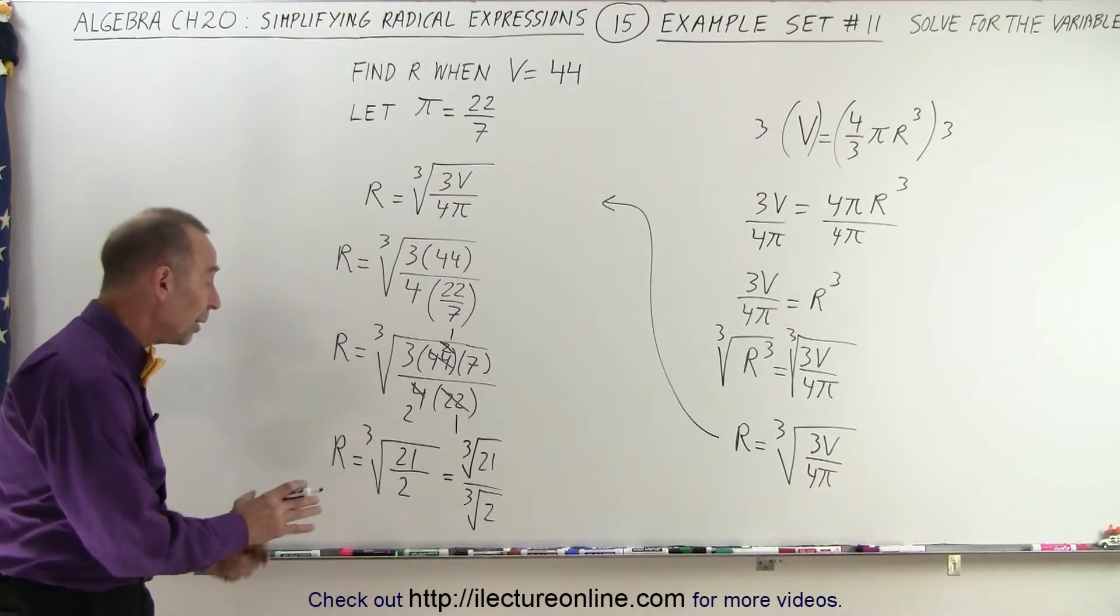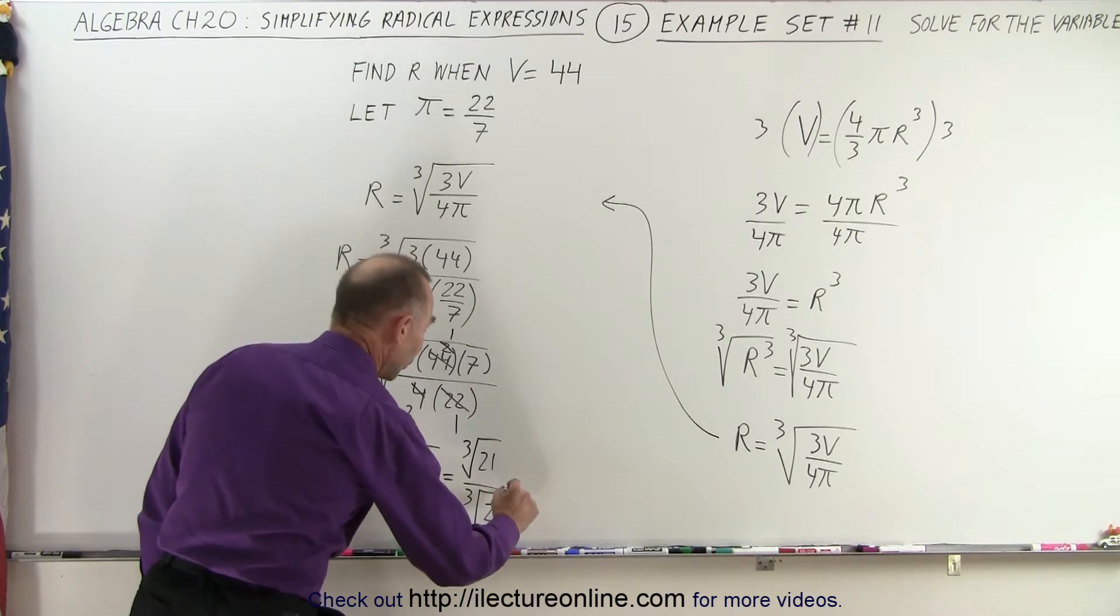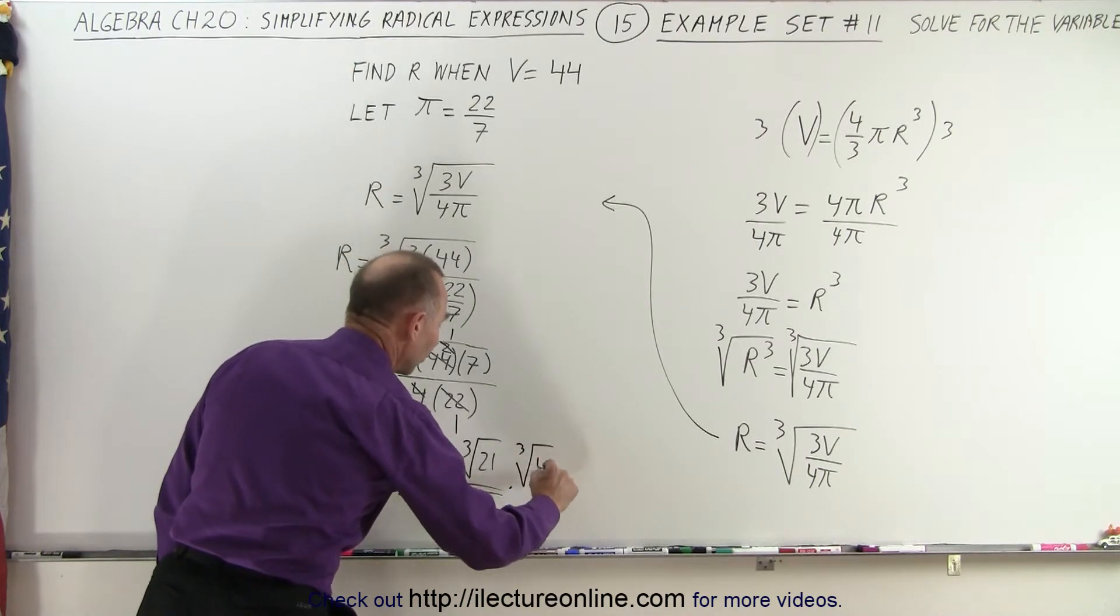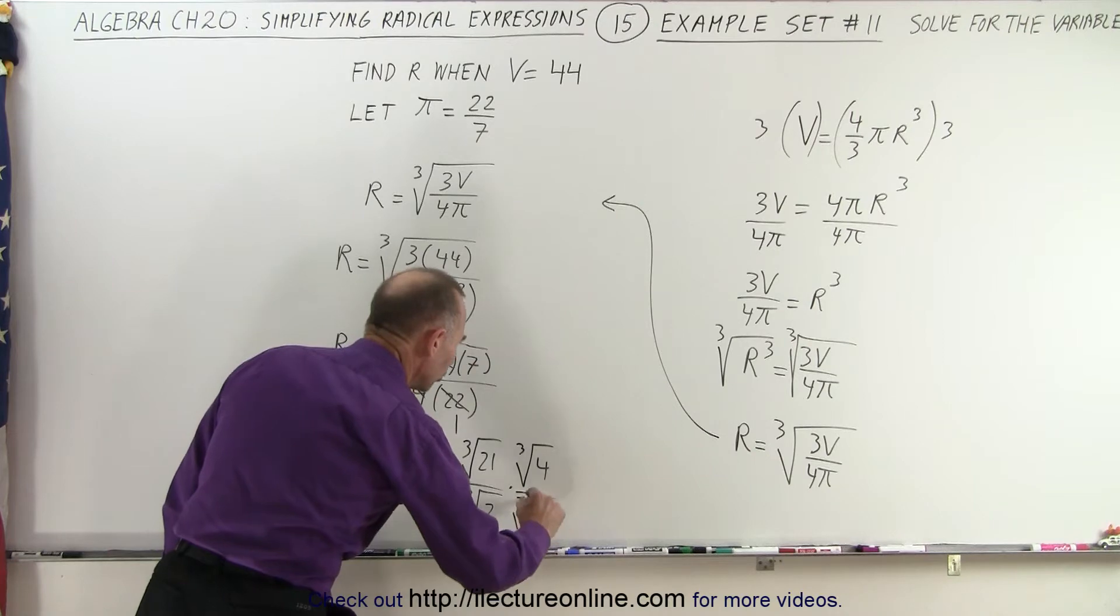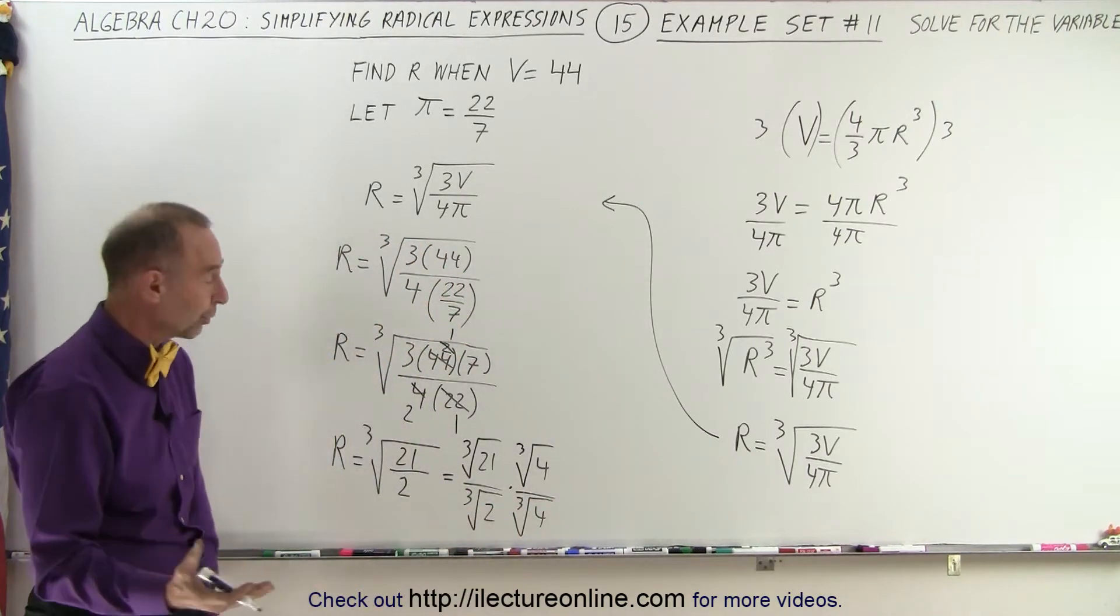The only thing that's left to do now is to rationalize the denominator. So what we need to do is we need to multiply both the numerator and the denominator by the cube root of 4. Why the cube root of 4? Because 2 times 4 is 8, and I can take the cube root of 8, which is 2.